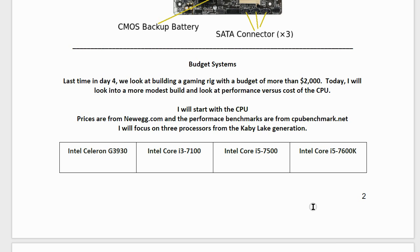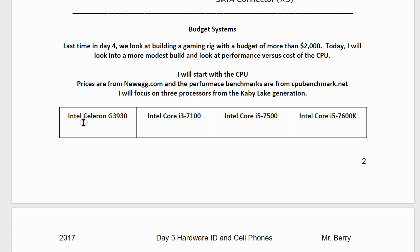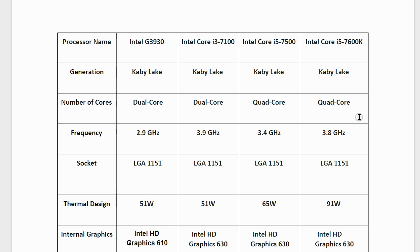We'll focus on four processors from the Kaby Lake generation: the Intel Celeron G3930, the Intel Core i3-7100, the Intel Core i5-7500, and the Intel Core i5-7600K. In terms of cores, the Celeron and Core i3 are dual-core, while both Core i5 models are quad-core.